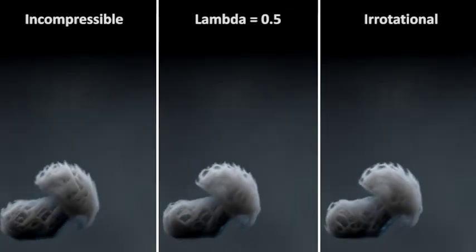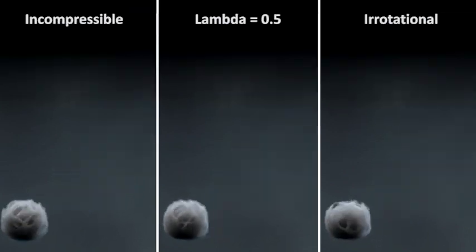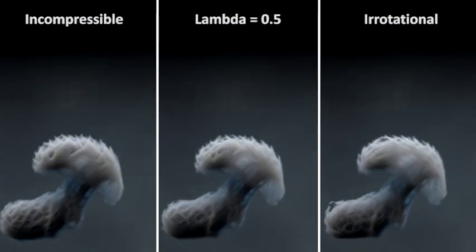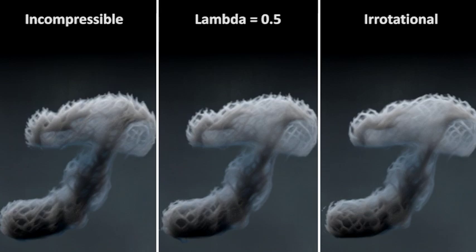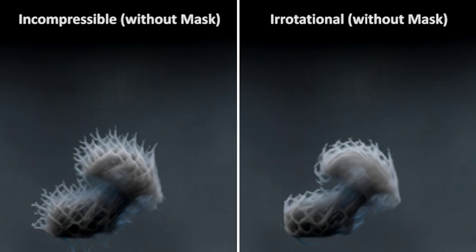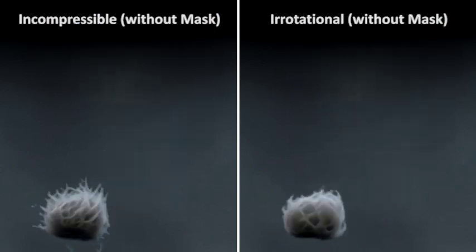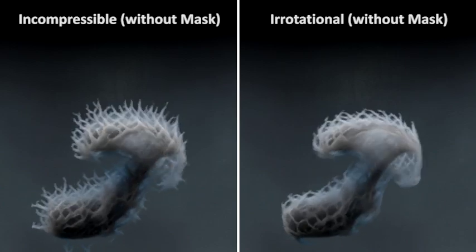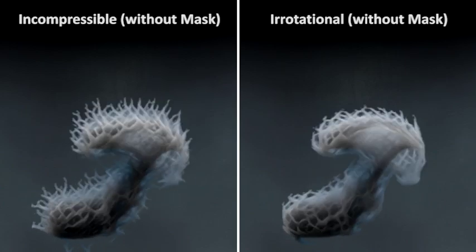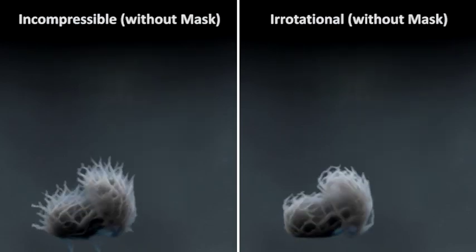Our method is also able to control the amount of smoke dissipation by the decomposition of the stylization velocity field into its irrotational and incompressible parts. In order to restrict the stylization to conform to the original smoke silhouette, we apply a mask that is composed based on the original density field. Not applying the mask causes the smoke to spread, especially in the case of divergence-free velocity fields.